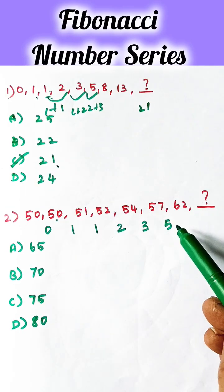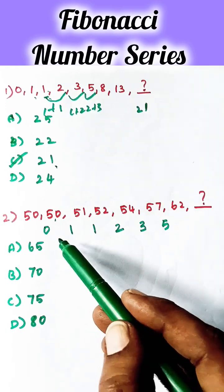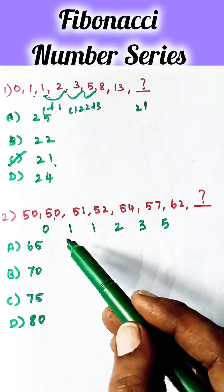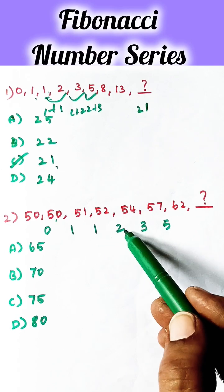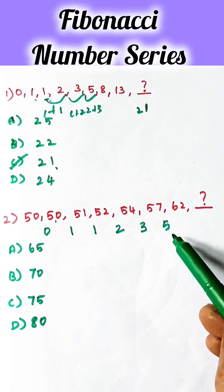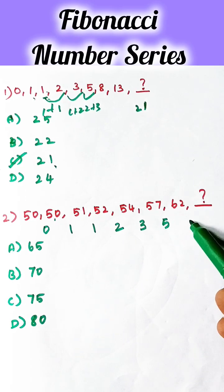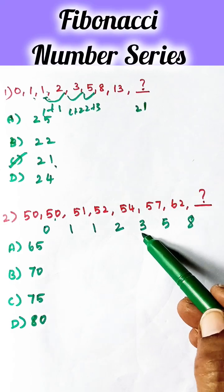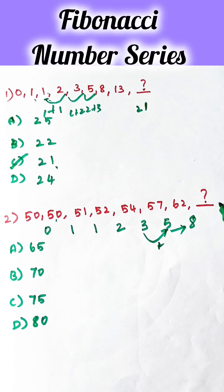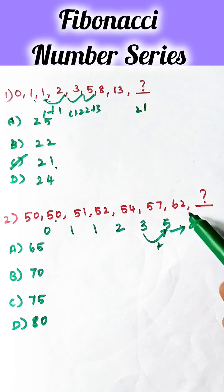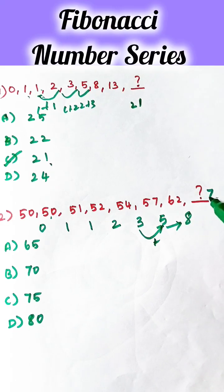The next number is 3 plus 5 equals 8. So if you add these two numbers, you will get this number. To find this out, you have to add 62 plus 8, which is 70. Option B is correct.